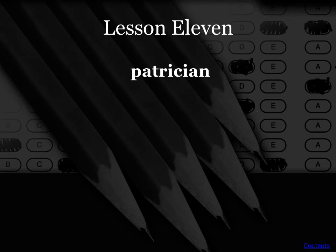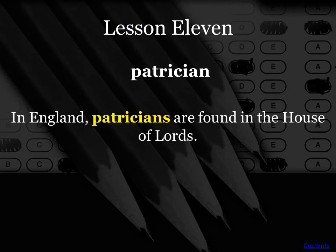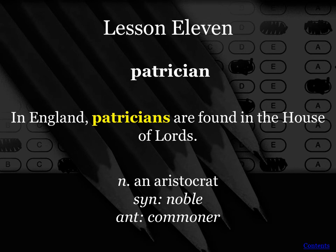Our next word is patrician. You might have heard this word in history class. In England, patricians are found in the House of Lords — so we're talking about parliament, the upper house — and we're talking about people who are aristocrats or noble. Most of the time they're obviously going to be wealthy. The opposite is commoner. You might have also heard of the term plebeian — those are the people at the bottom of society, just the everyday common person.